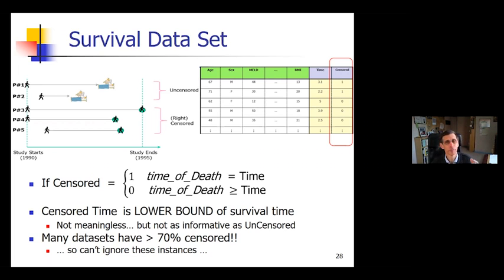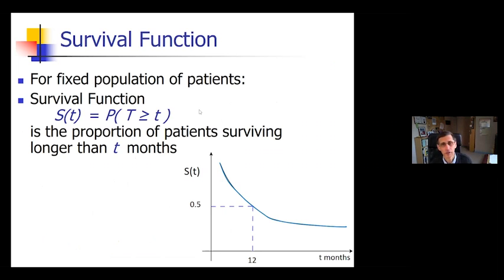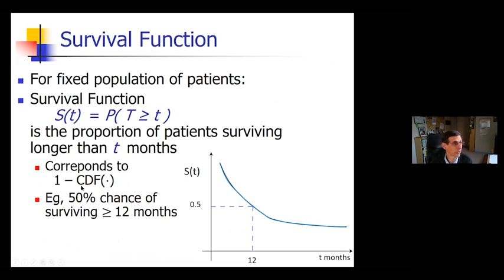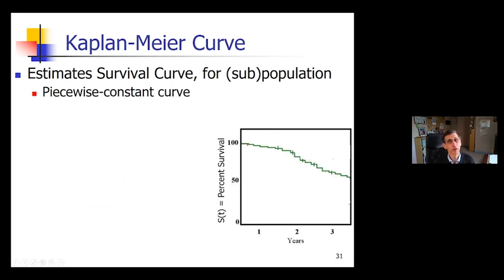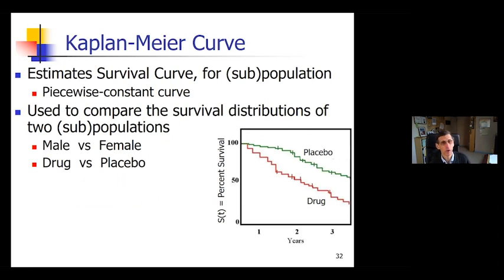When I first started looking at survival prediction, I figured there'd be a thousand individuals and five are censored. I'll throw them out. No. Many data sets have like 70% censored. I can't throw away 70% of data. So I need to do something clever with this information. One idea is survival functions. Every value, so T is time, S at T is the probability of living at least T. There's a very famous model, a Kaplan-Meier model, that estimates survival curves for a population. It's a piecewise constant curve.